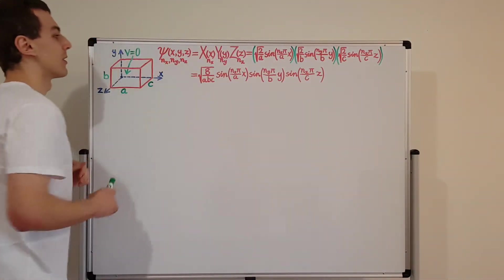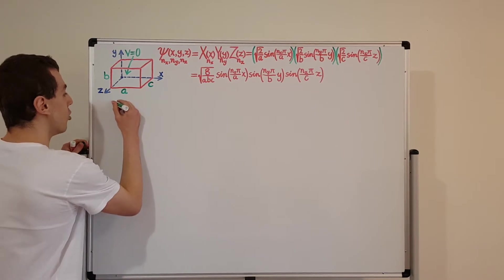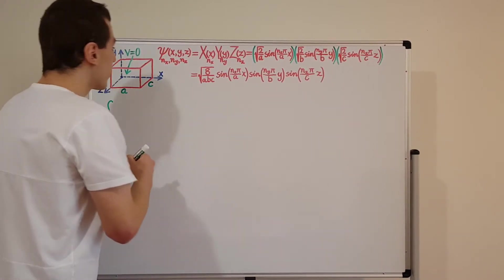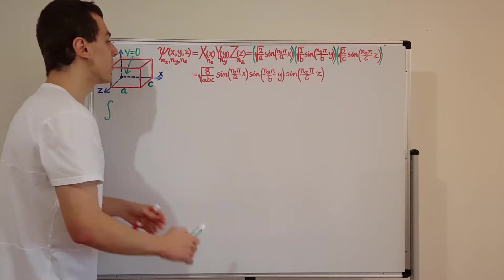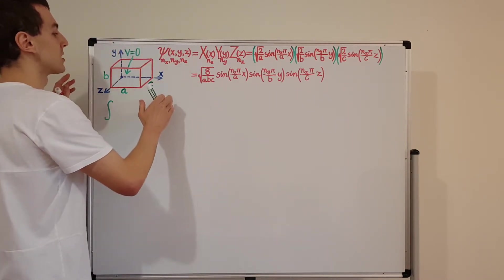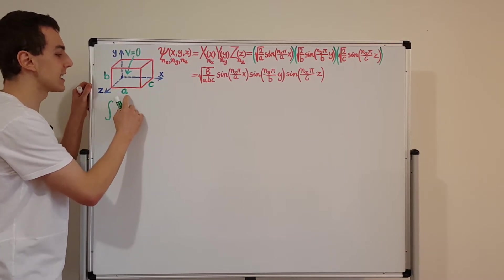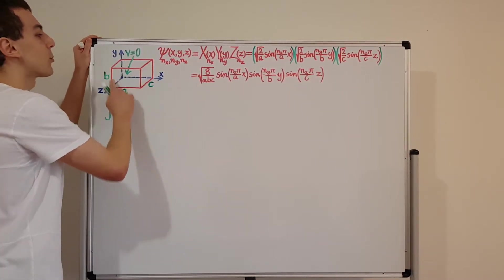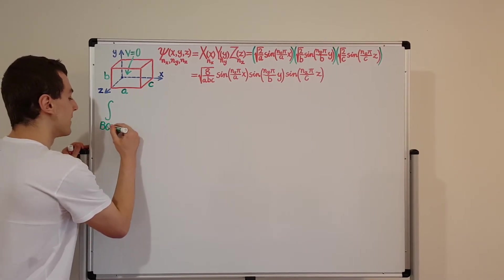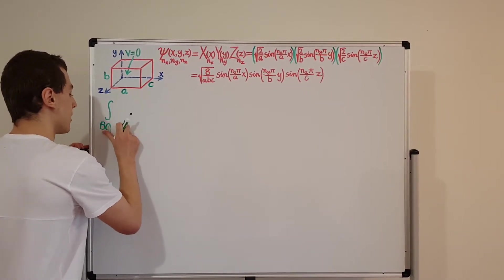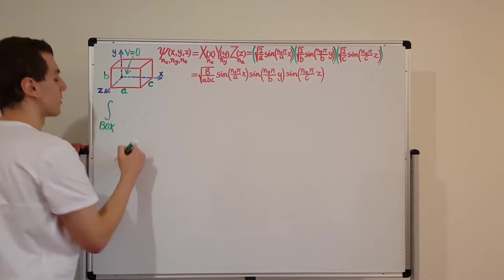To normalize a wave function, we integrate over the entire box. Normally we'd integrate x, y, and z from minus infinity to plus infinity, but there is no wave function outside the box, so we have a finite domain. X, y, and z can only go between 0 and each of the lengths a, b, and c respectively. That is the only place where we have non-zero values, so we're just going to integrate over the box.